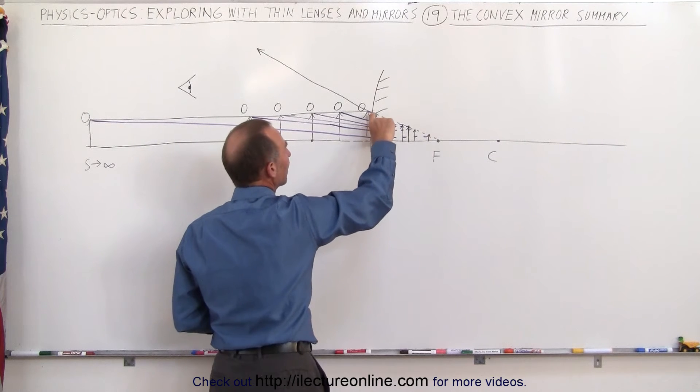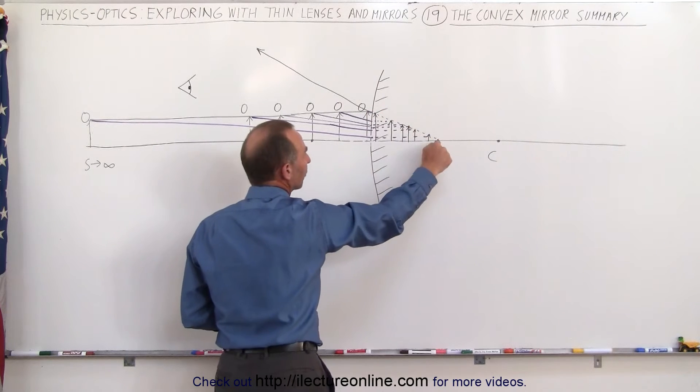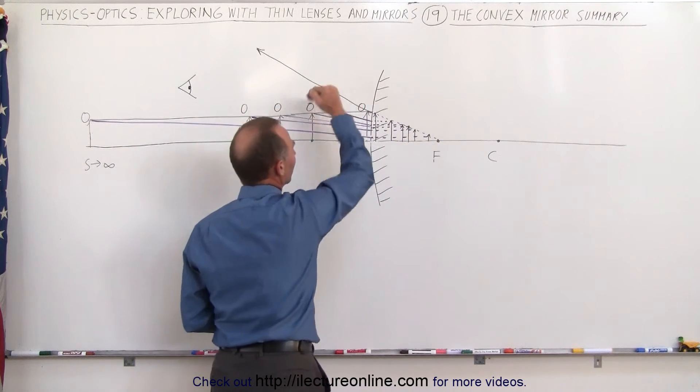Notice then that the image will always form in such a way that the top of the image will form along that line between the focal point and where the first ray hits the mirror.